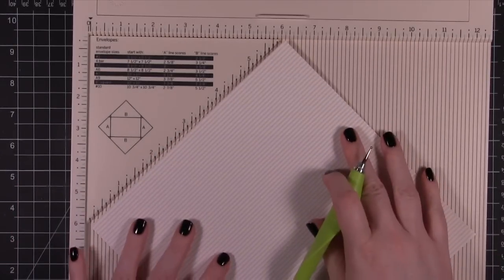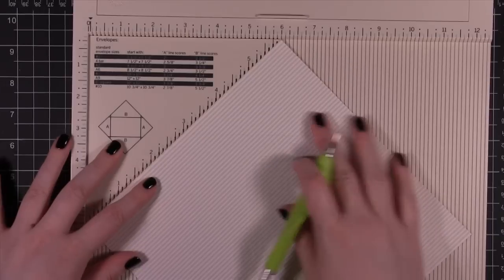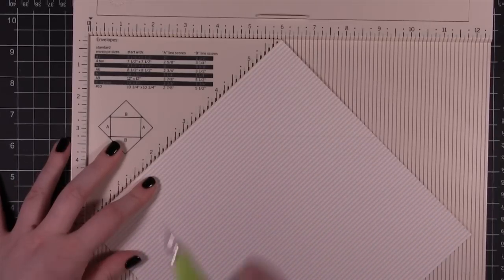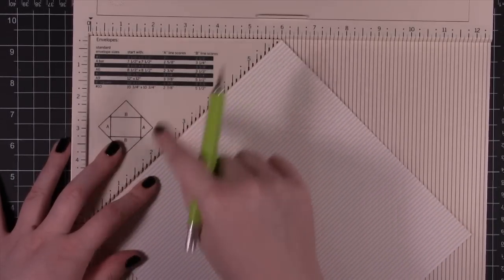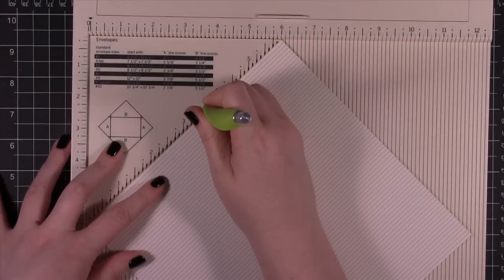Now I'm going to turn the paper 90 degrees. Now I'm going to do a B line. So I'm going to do A, B, A, B. So coming up to B, it's 3 and 5 eighths. That would be right here.